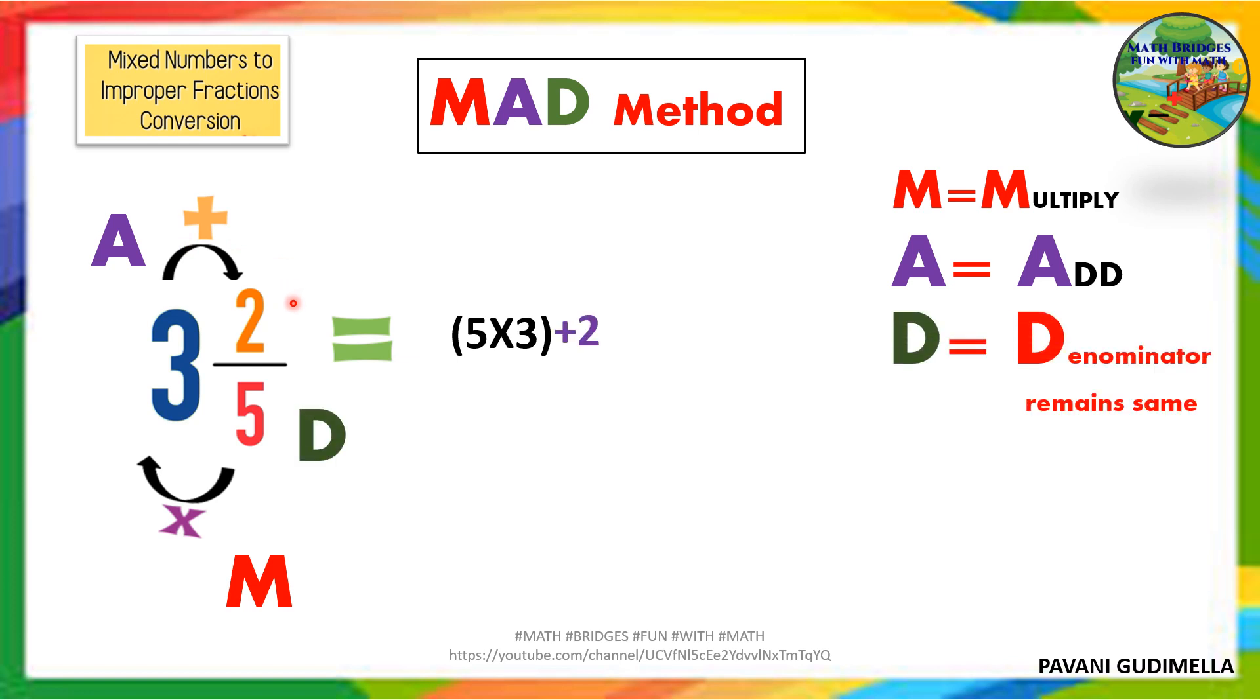And D, third step, D means the denominator remains the same. So denominator we write as it is: 5. So 5 times 3 is 15, 15 plus 2 is 17/5. So this is the improper fraction. See, sometimes mnemonics will help us to solve the problems easily and also you can remember for a longer time.